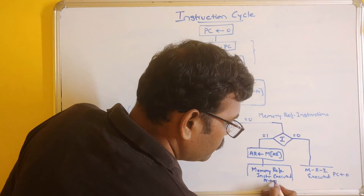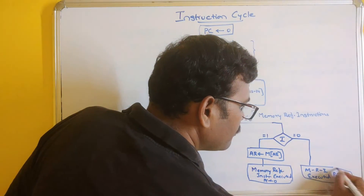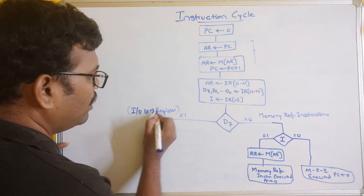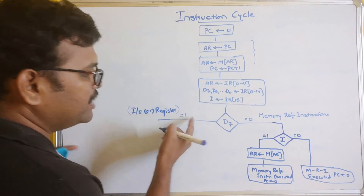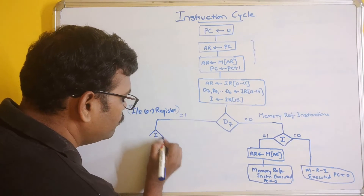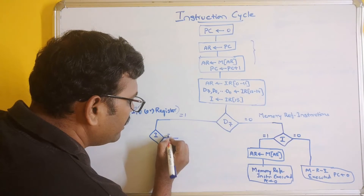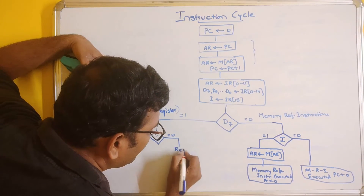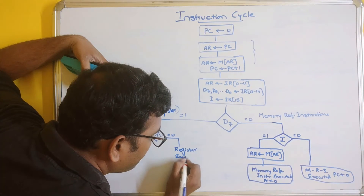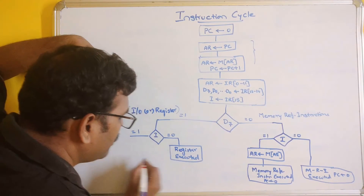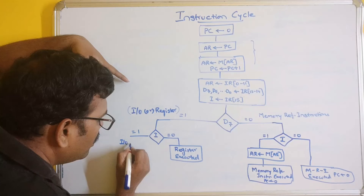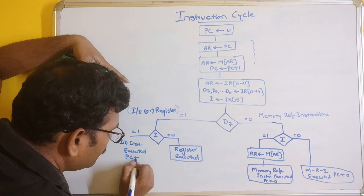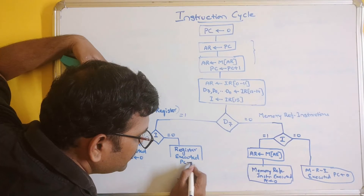For the D7 = 1 branch (I/O or register reference), we again check the mode bit I. If I = 0, register reference instructions are executed. If I = 1, I/O instructions are executed. After execution in both cases, PC resets to move to the next instruction.